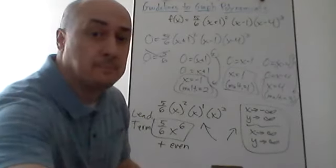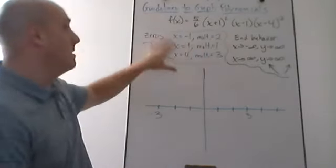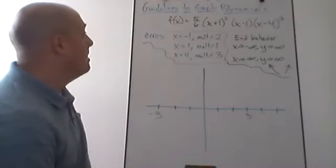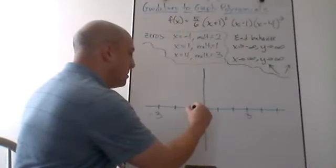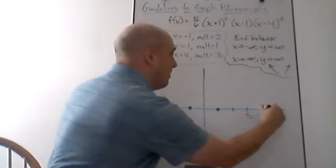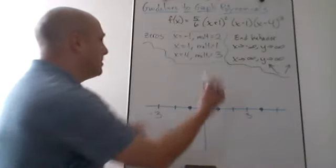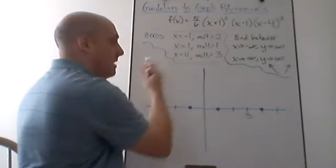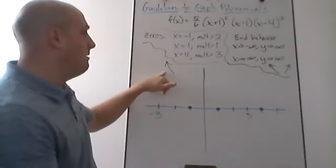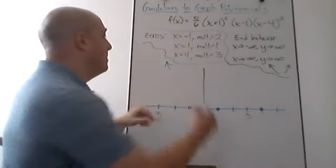Now let's put all the information together to sketch the graph. I'll mark the x-intercepts: x = −1, x = 1, and x = 4. I start drawing from the left side, where end behavior tells us the graph comes down from above — the arrow points upward on the left. Moving right toward x = −1, which has a multiplicity of 2.